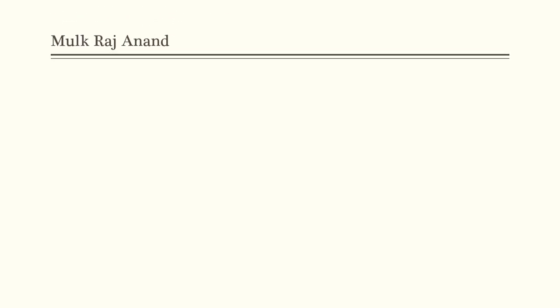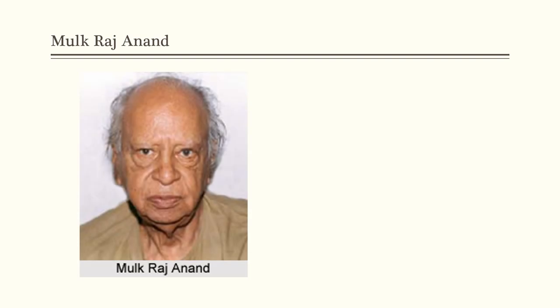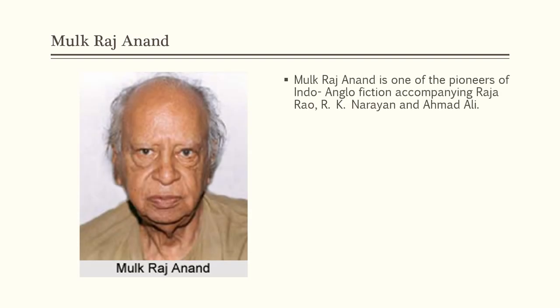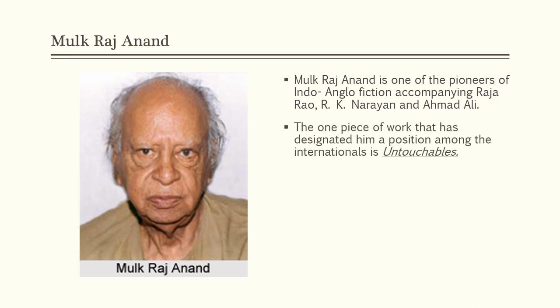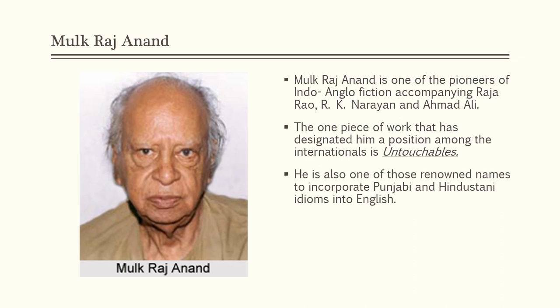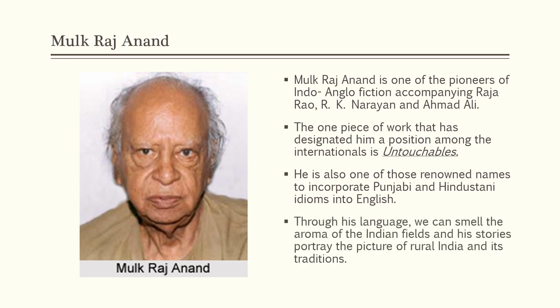Mulk Raj Anand is one of the pioneers of Indo-Anglo fiction, accompanying Raja Rao, RK Narayan and Ahmed Ali. The work that has designated him a position among the internationals is 'Untouchables.' He is also one of those renowned names to incorporate Punjabi and Hindustani idioms into English. Through his language we can smell the aroma of Indian fields, and his stories portray the picture of rural India and its traditions.